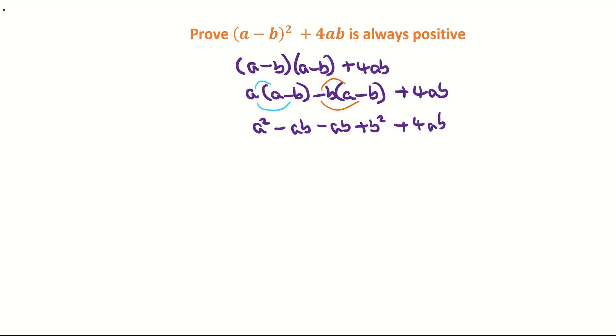Then we are just going to tidy it up a bit here. I'm going to group the -ab and the -ab together and that's going to make a² - 2ab + b² + 4ab.